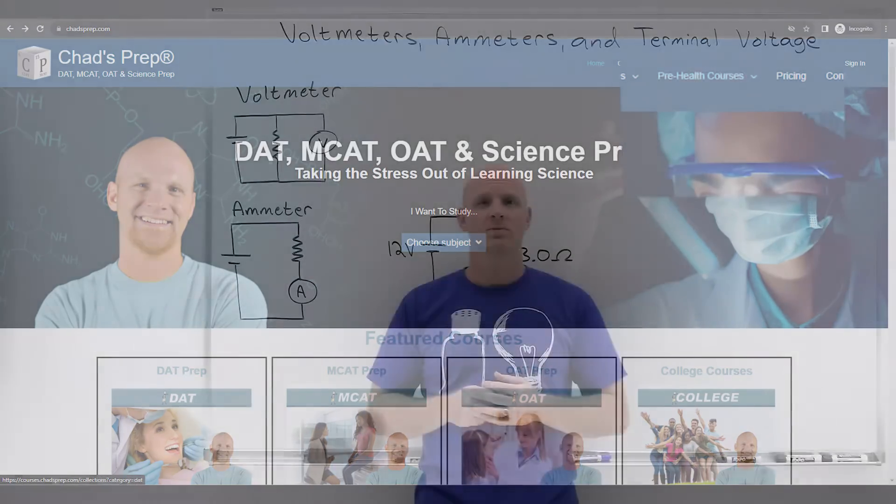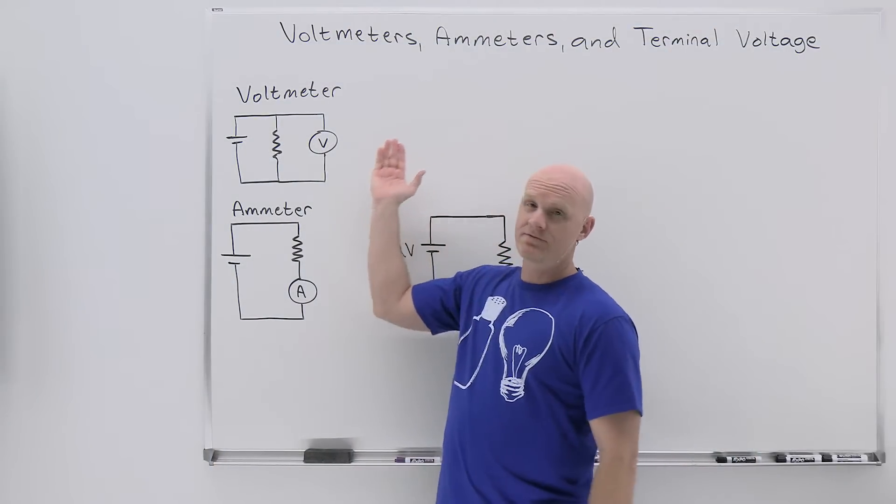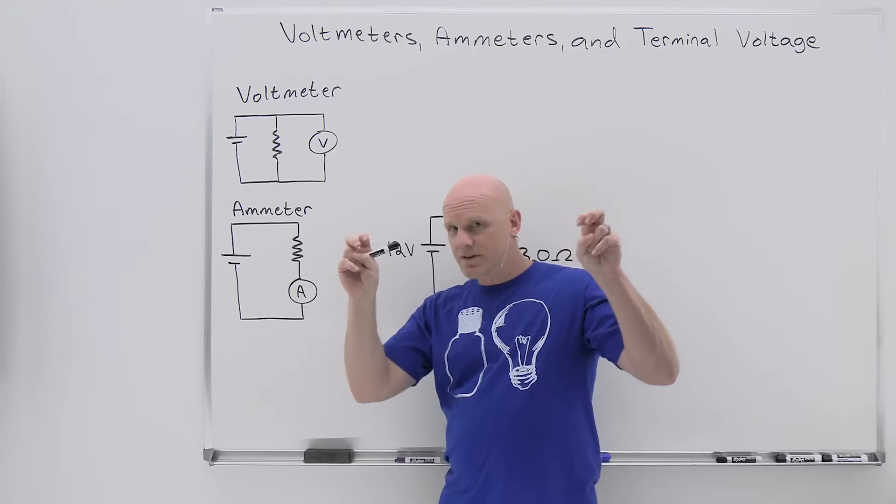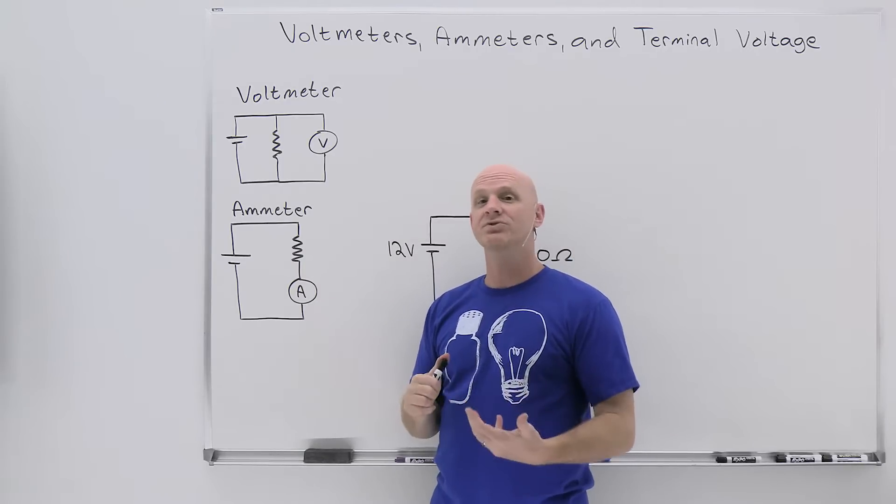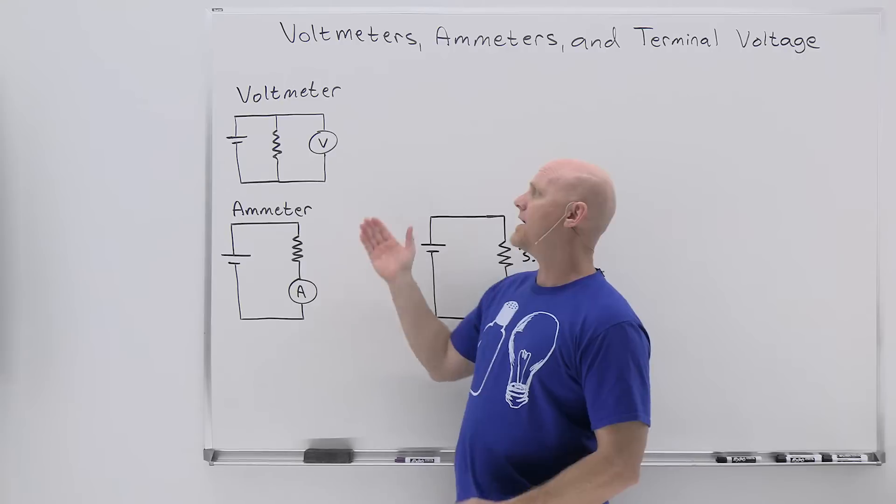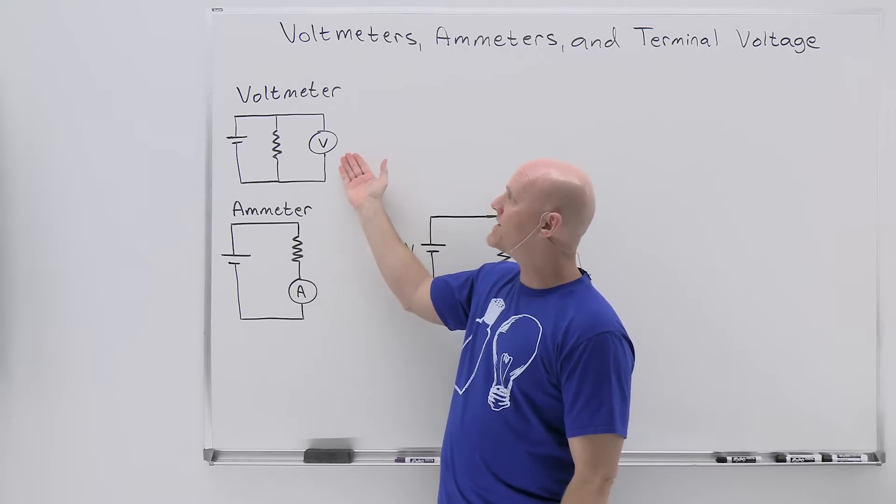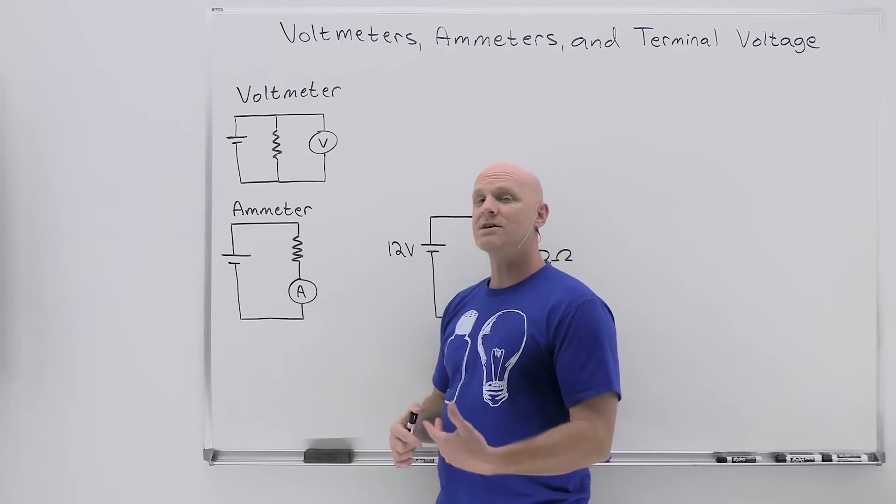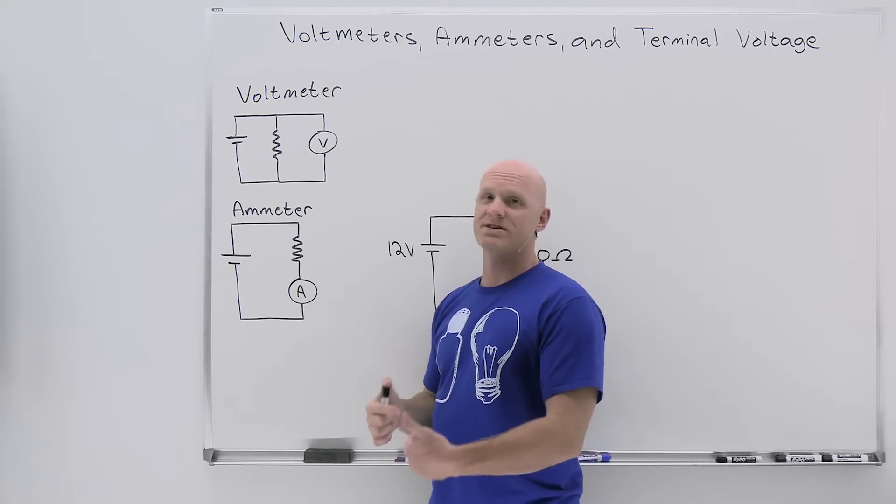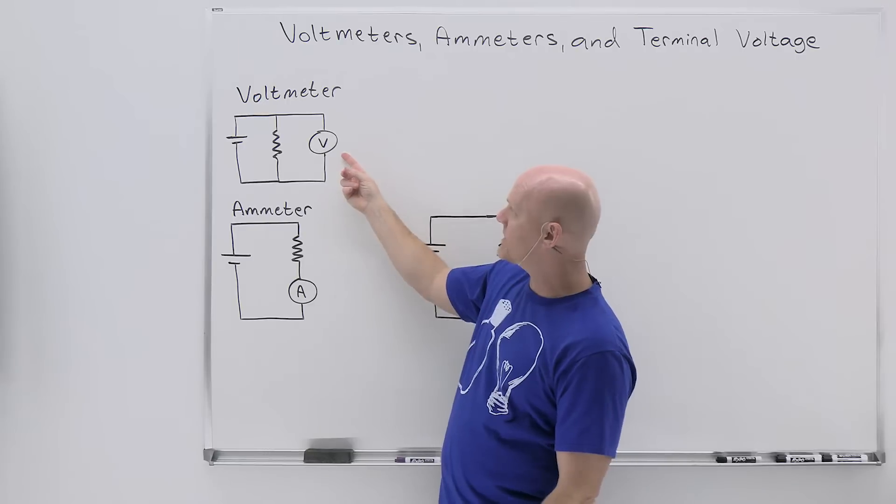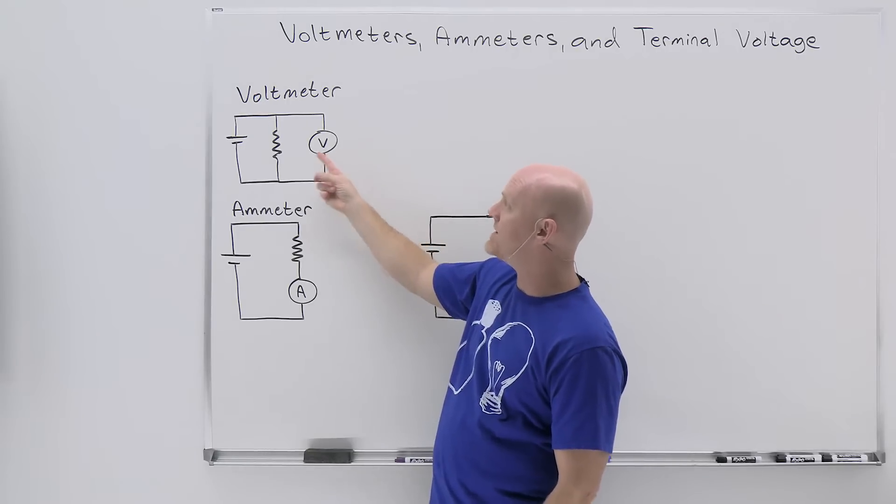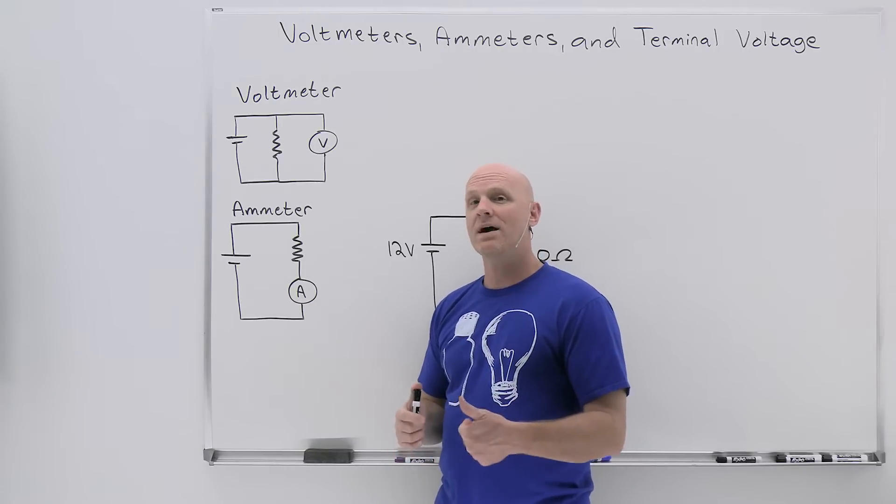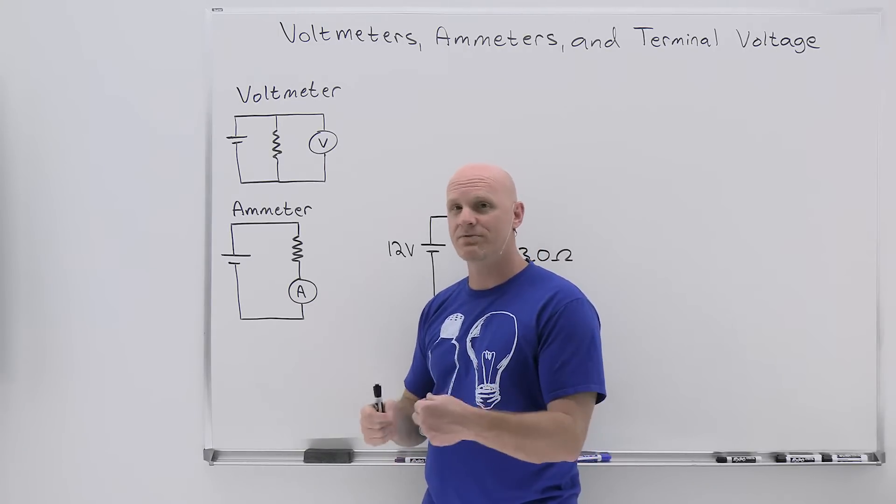So we're going to start by talking about voltmeters. A voltmeter measures volts - in this case, it's measuring the voltage, or more properly called the potential difference, across a resistor in a circuit. To accomplish that, you want to hook up your voltmeter in parallel with the resistor of interest. The idea is that the voltmeter itself has its own internal resistor, so we're effectively hooking up the resistor of the voltmeter in parallel with the resistor of interest.